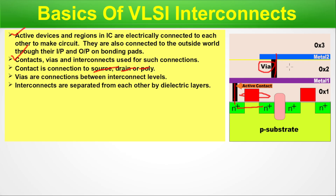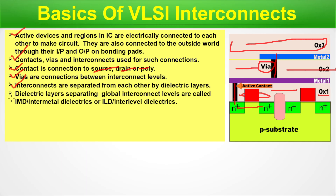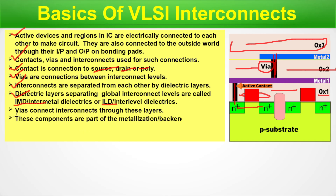These interconnects are not in vacuum — oxide is present in this area. Dielectric layers separating global interconnect levels are called IMD (inter-metal dielectric) or ILD (inter-level dielectrics). These are the nomenclature for dielectric layers to separate them from the gate level. Vias connect interconnects through these layers perpendicularly, while metal runs laterally. These components are part of metallization, or back end of line or BEOL.